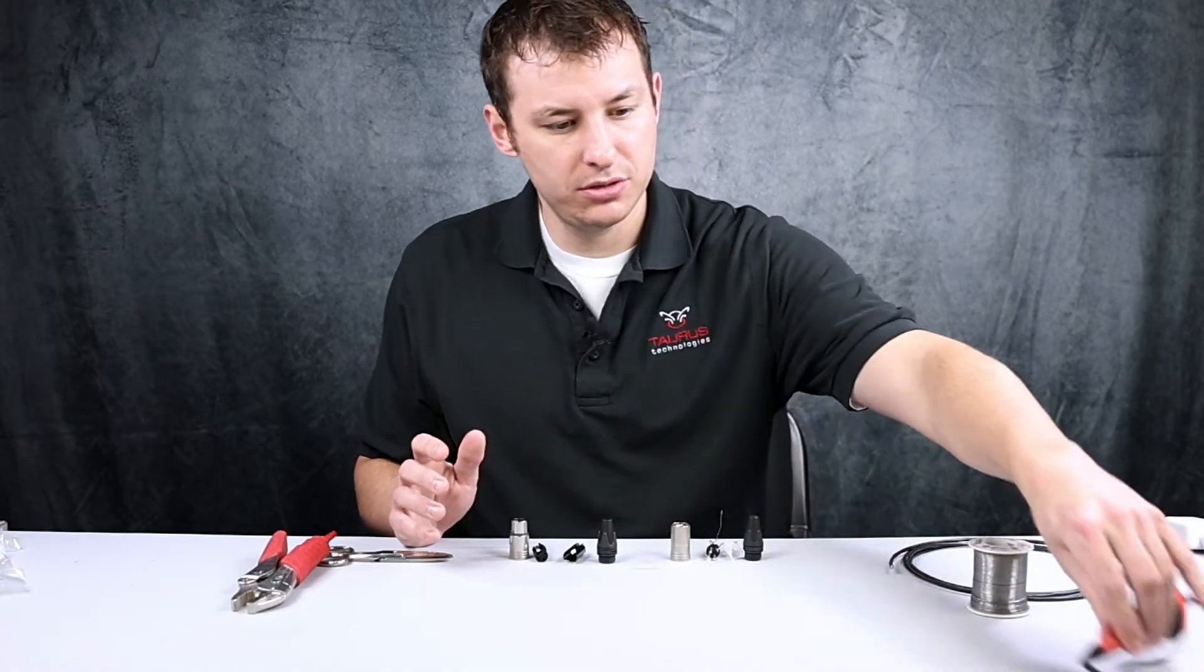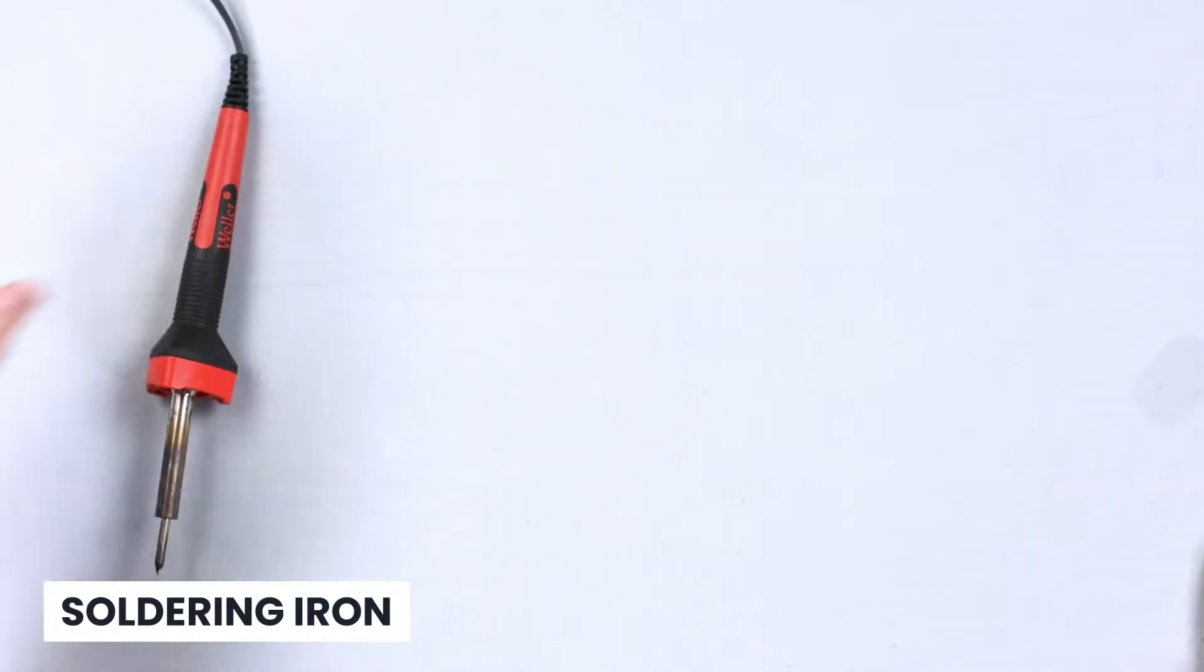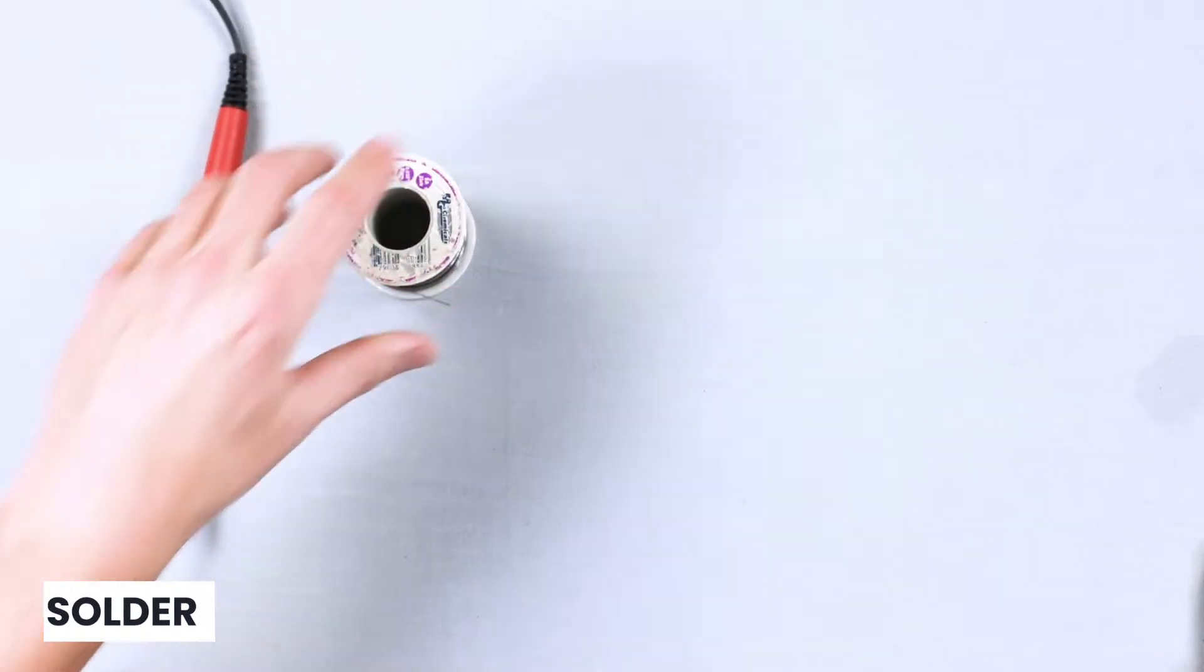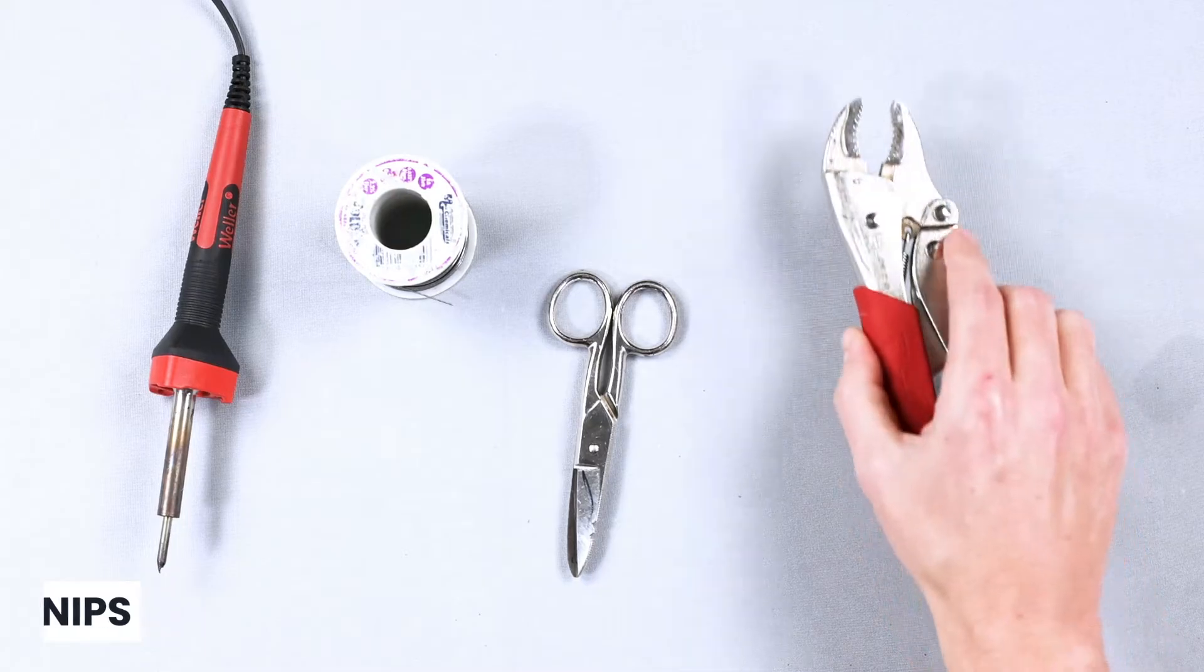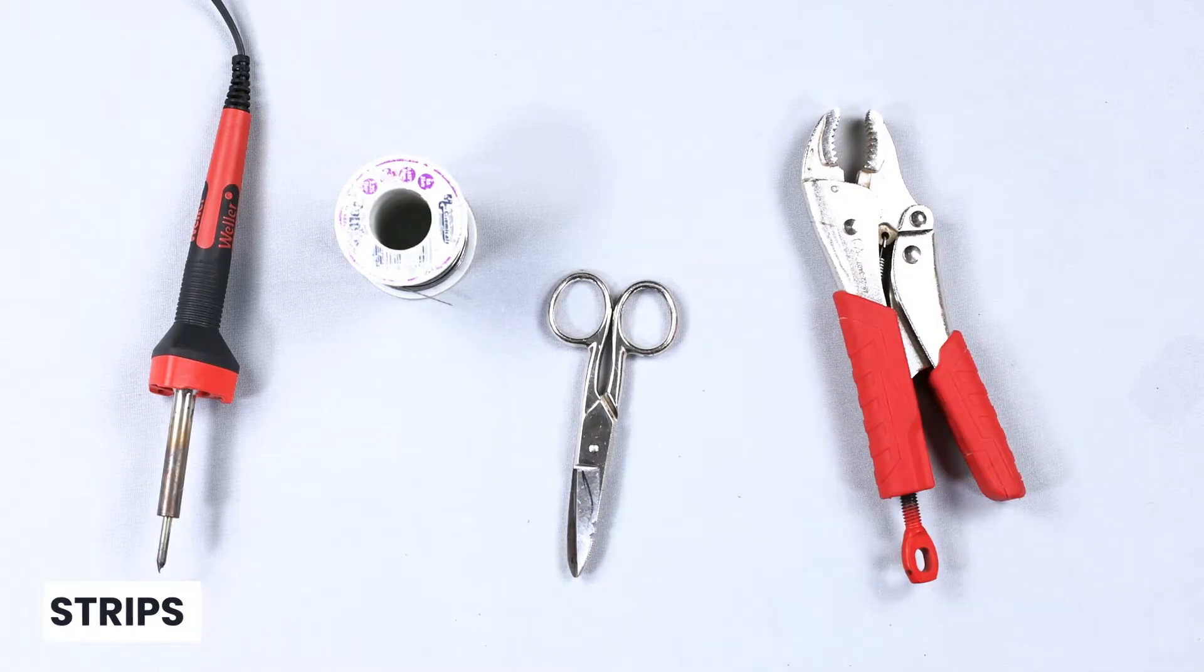You're going to need a couple things. First, you're going to need a soldering iron, you're going to need some solder, and then you're going to need some snips, you're going to need some vice grips, and then you're going to need a connector.